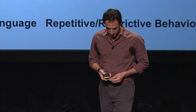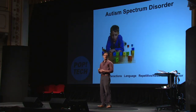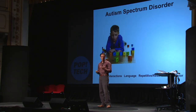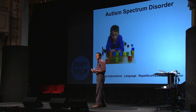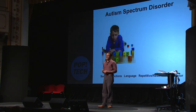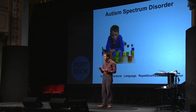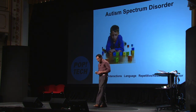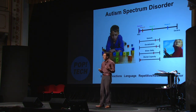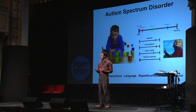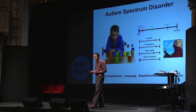You probably know that autism is not a single condition. There are several disorders under the umbrella of what we call autism. People with autism have impaired social interactions, language problems, and they also engage in repetitive or restrictive behavior. It is a spectrum, meaning there are some kids that are mildly affected, but there are also more severe types of autism.